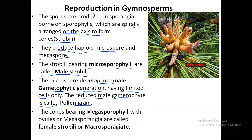The cones which bear the megasporophyll with ovules or megasporangium are called the female strobili or macrostrobili. Remember the word macrosporangium, because megasporangium and macrosporangium are the same thing. The words mega and macro have the same meaning, which means large.